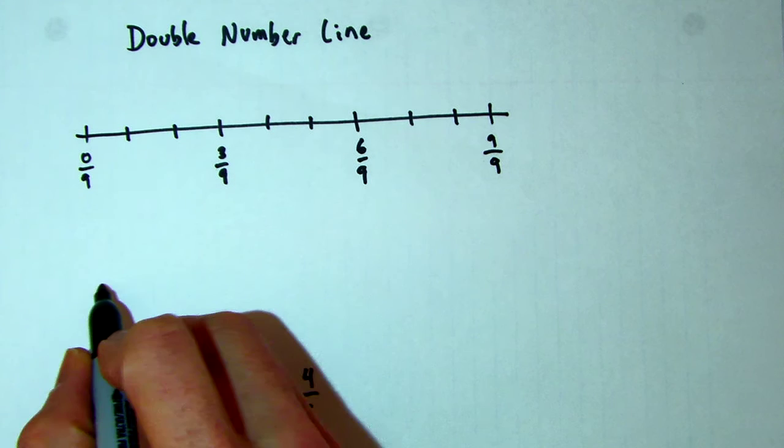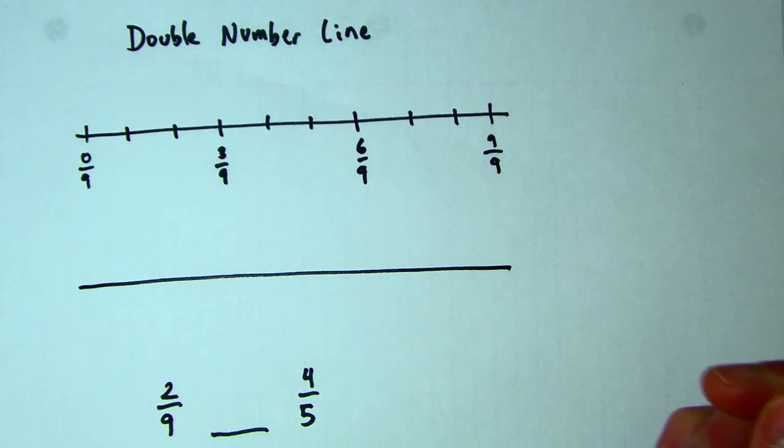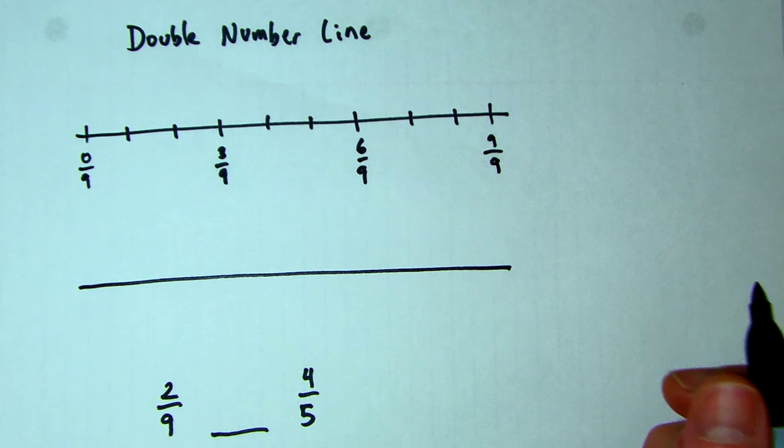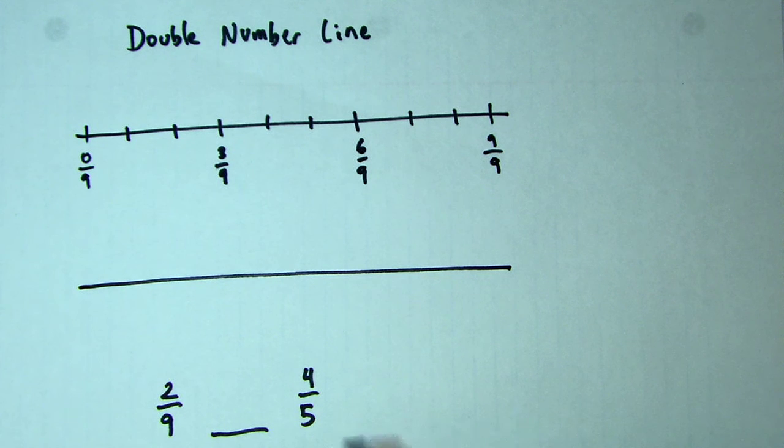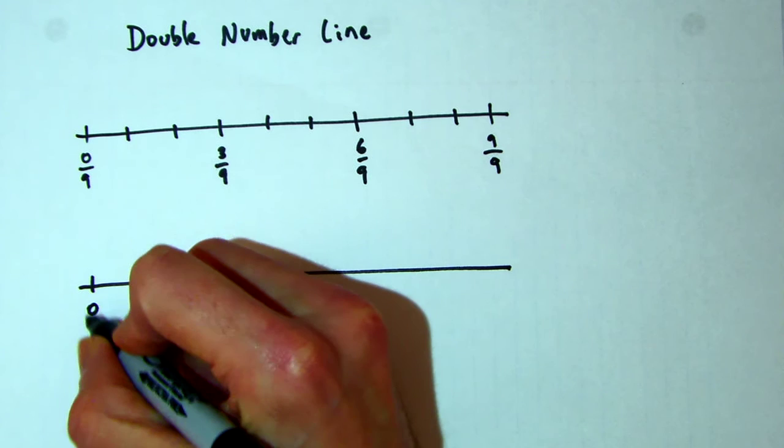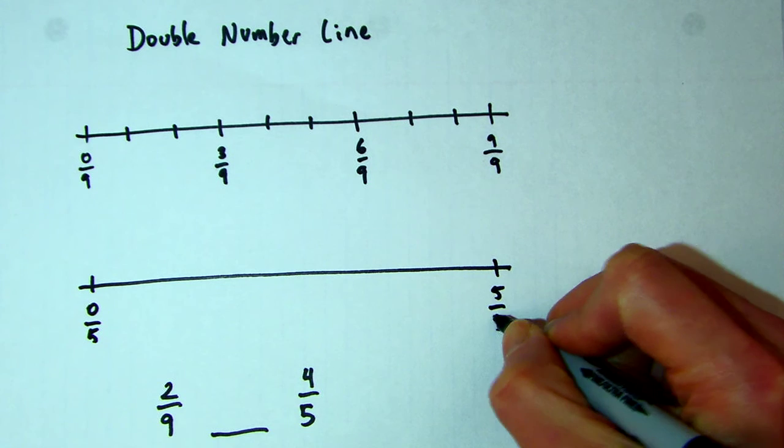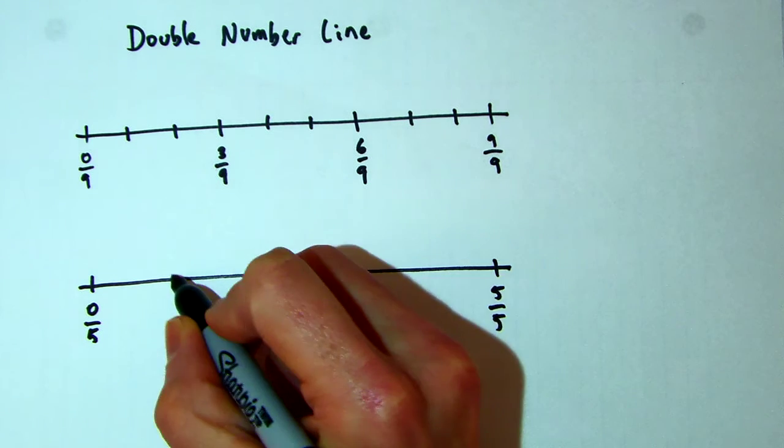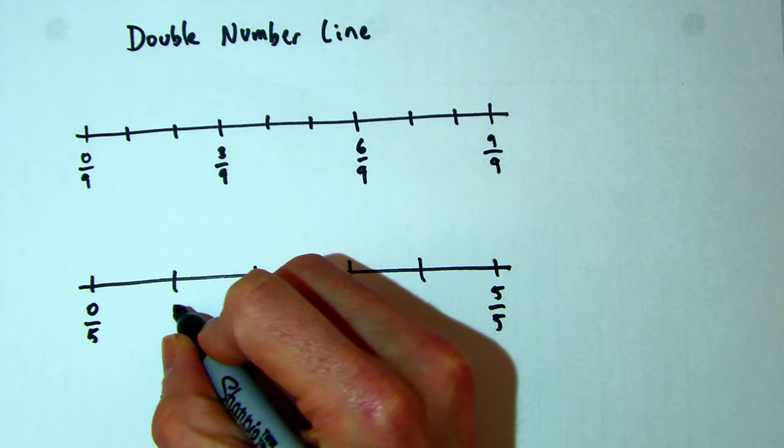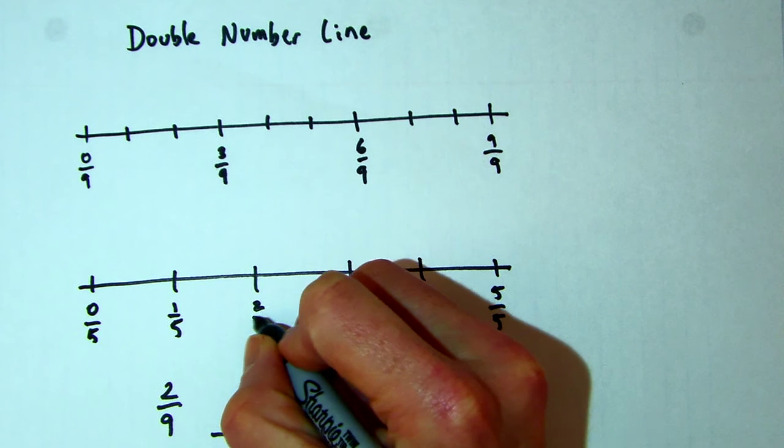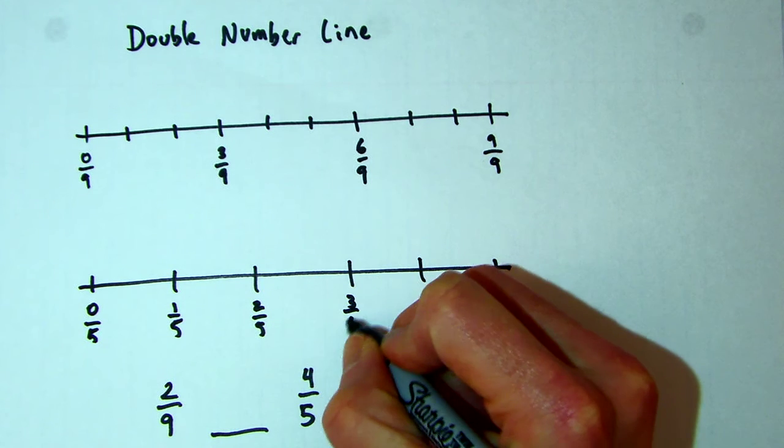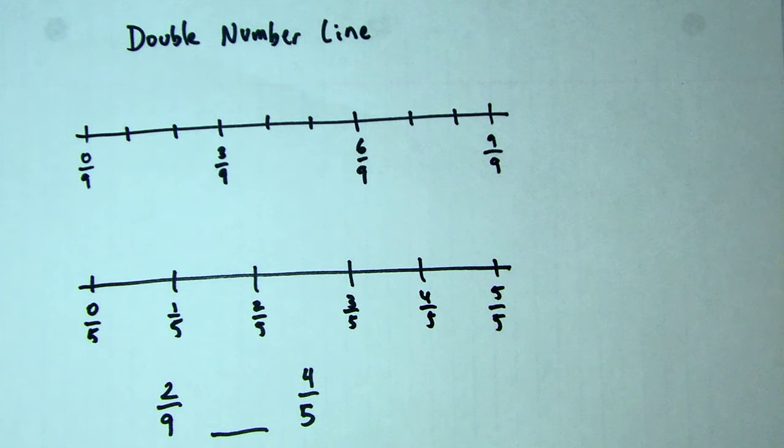I also have a number line down here. Now this is going to be fifths. I'm dealing with this other fraction. So this is 0/5 and this is 5/5. This is 1/5, 2/5, 3/5, 4/5, and 5/5.